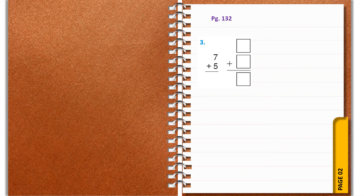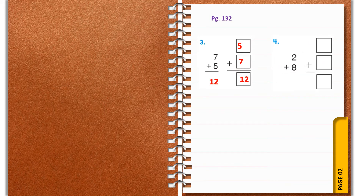Question number three: seven plus five. Draw the counters and find the sum — seven plus five gives you twelve. Now change the order and write five plus seven. Still the answer, or the sum, is the same: twelve.